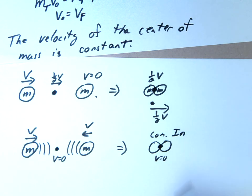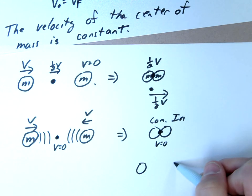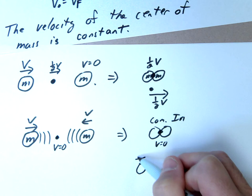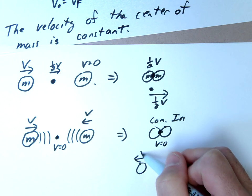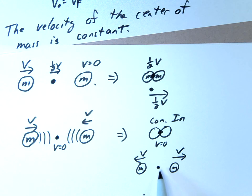Well what would happen if they bounce off each other in a completely elastic collision? So this one would reverse with V this way, this one would reverse with V this way. But since they have the same masses, they would again have the center of mass would be zero.